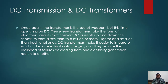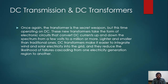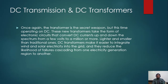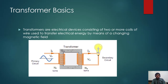Once again the transformer is the secret weapon, but this time operating on DC. These new transformers take the form of electronic circuits that convert DC currents up and down the spectrum from a few volts to a million or more — lighter and smaller than traditional ones. DC transformers make it easier to integrate wind and solar electricity into the grid and reduce the likelihood of failure cascading between regions. So DC transmission offers lower losses and easier flexible connectivity, especially for renewables.